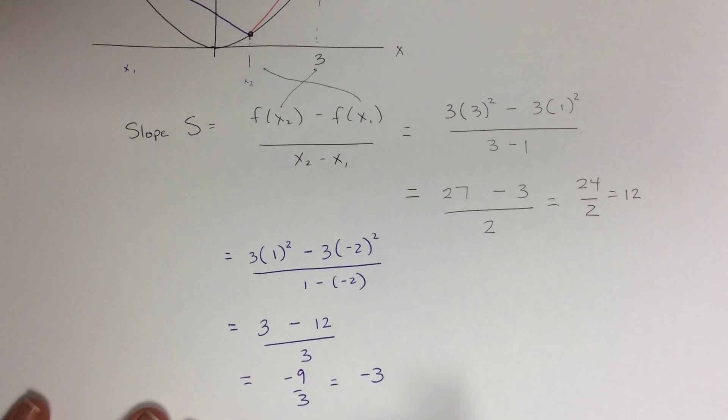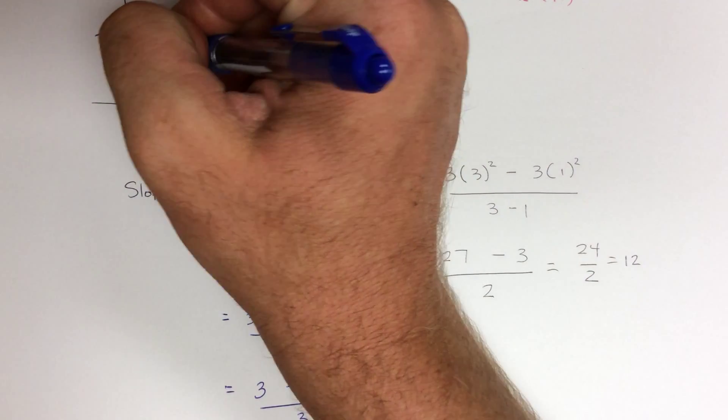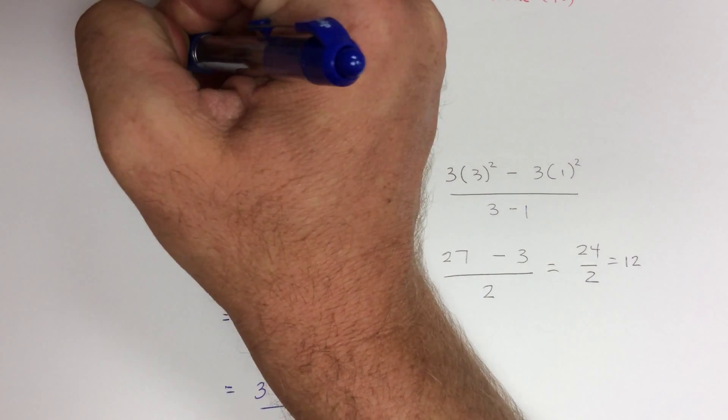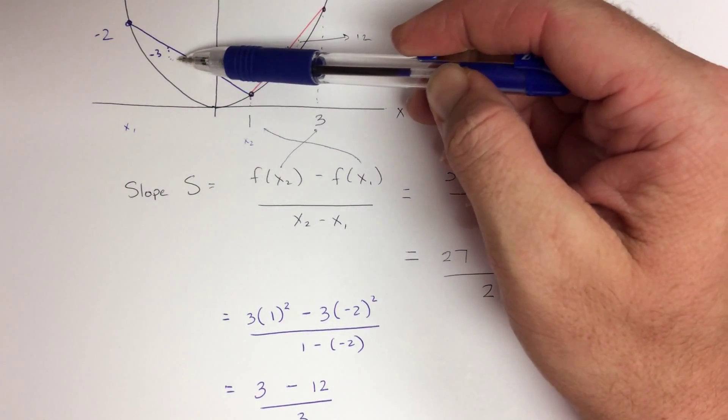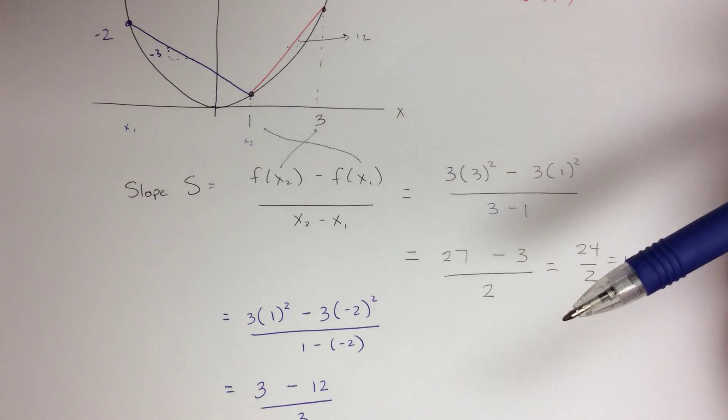So that going back with negative 3, it tells me the slope of this line right here is negative 3. So for every 1 that we go over, y will go up by negative 3.